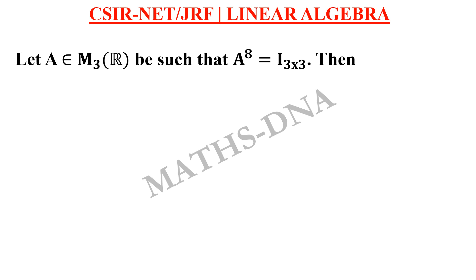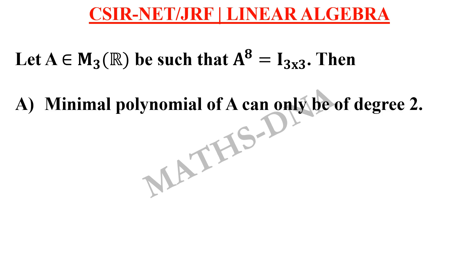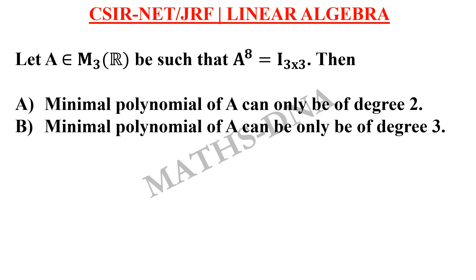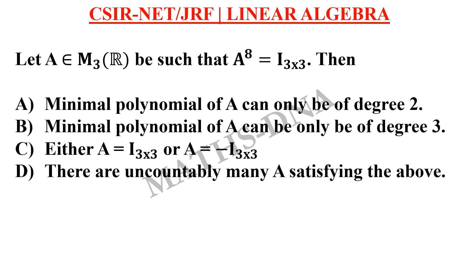Moving on to the question. Let A belong to M3(R), which is matrices of 3×3 order whose entries are real numbers, be such that A raised to 8 equals I, an identity matrix of order 3×3. Then the options are: A) minimal polynomial of A can only be of degree 2; B) minimal polynomial of A can only be of degree 3; C) either A equals I or A equals minus I; D) there are uncountably many A satisfying the above.